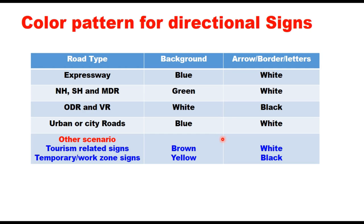Color patterns for directional signs are given in the IRC code for different categories of roads. For expressways, the background is blue and arrow, border or letters are white. For national highway, state highway and MDR, it is green background with white. For ODR and village roads, the background is white with black arrow, border and letters. For urban and city roads, the background is blue with white letters. For tourism related signs it is brown and white, and for temporary or work zone signs it is yellow and black.